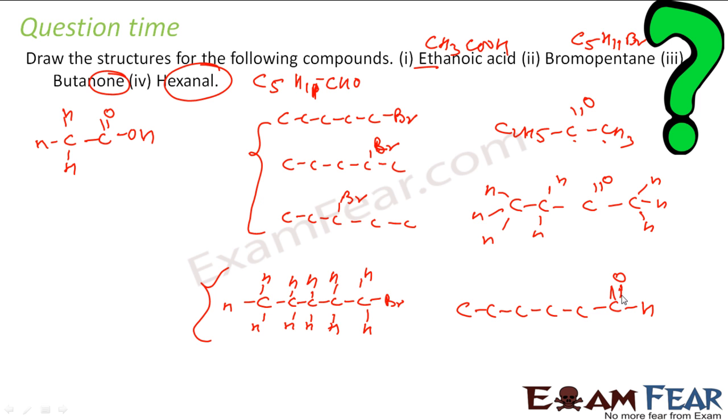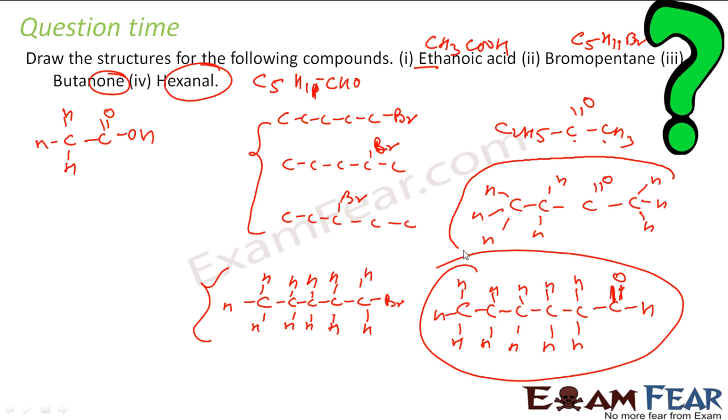CHO is something like this. For aldehyde, it will be something like this: one double bond with oxygen and one single bond with hydrogen. And these I can put hydrogen if you want. All these are hydrogens. And that is my answer. This is my hexanal, correct. This is my butanone. These all are my bromopentane because three different possible structures. And this is my ethanoic acid.